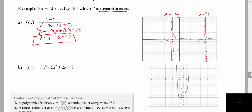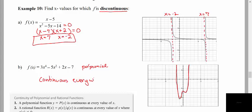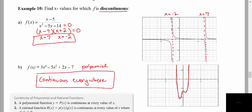The next function here — notice that we don't have any variables in the denominator. This is what we call a polynomial function, and polynomial functions are continuous everywhere. This is a very nice function. We have only positive exponents and no variables in the denominator, so there are no issues at all. If I look at the picture, I notice that I can draw the entire picture without picking up my pencil. This is what we call a continuous function — it is continuous everywhere, so it is not discontinuous anywhere.